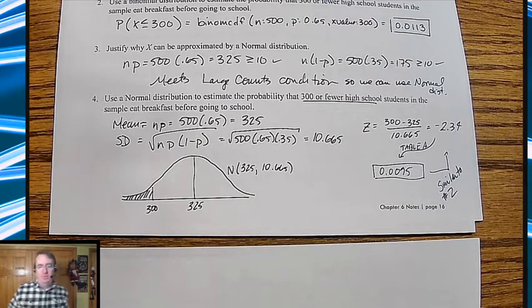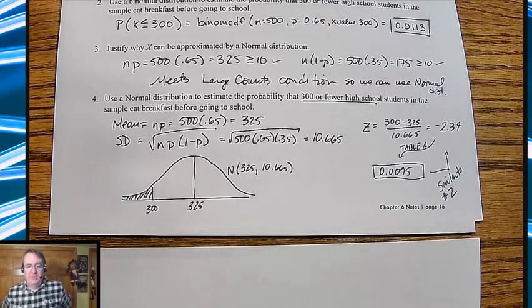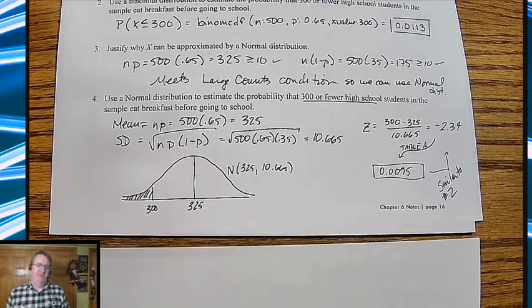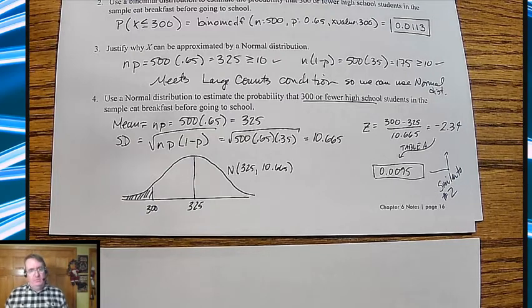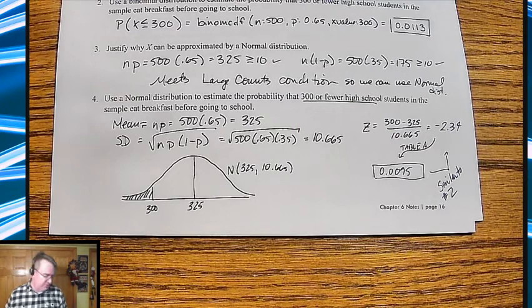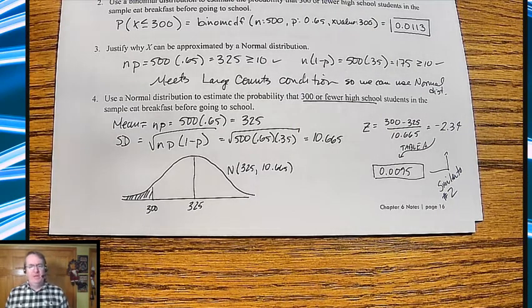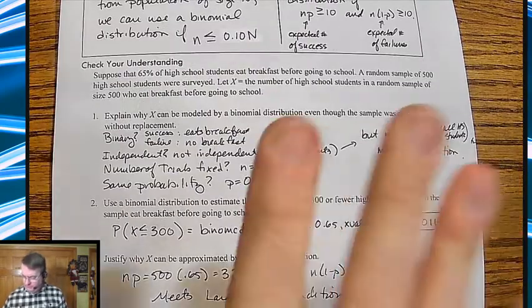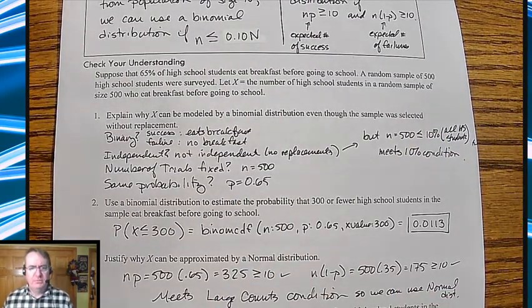So again, is it perfect? No, but it is within one-tenth of a percent. And if you're within one-tenth of a percent, most people would be like, fine. So anyway, that's the thing. That's the two conditions, the 10% condition and large count condition. Sorry, I was thinking about tomorrow where we get to flip water bottles. So if you have any questions, let me know. Talk to you later.